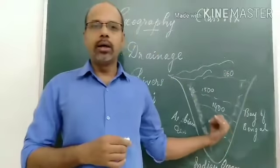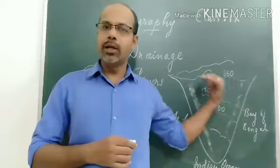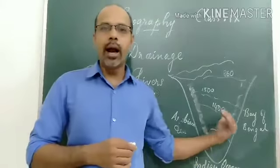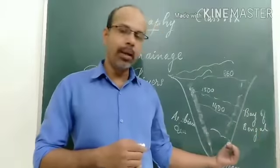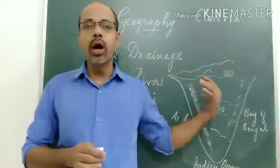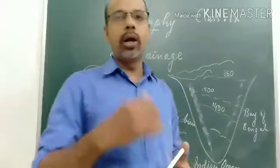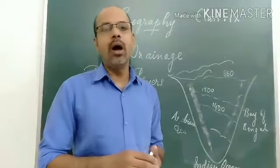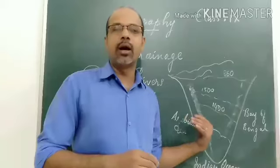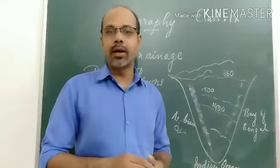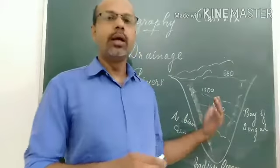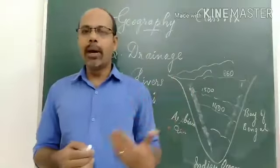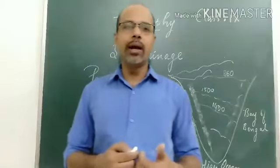Kaveri River flows through Tamil Nadu, near Cuddalore, and enters the Bay of Bengal. Its total length is about 760 kilometers. The important tributaries of Kaveri are Amravati, Bhavani, Hemavati, and Kabini.